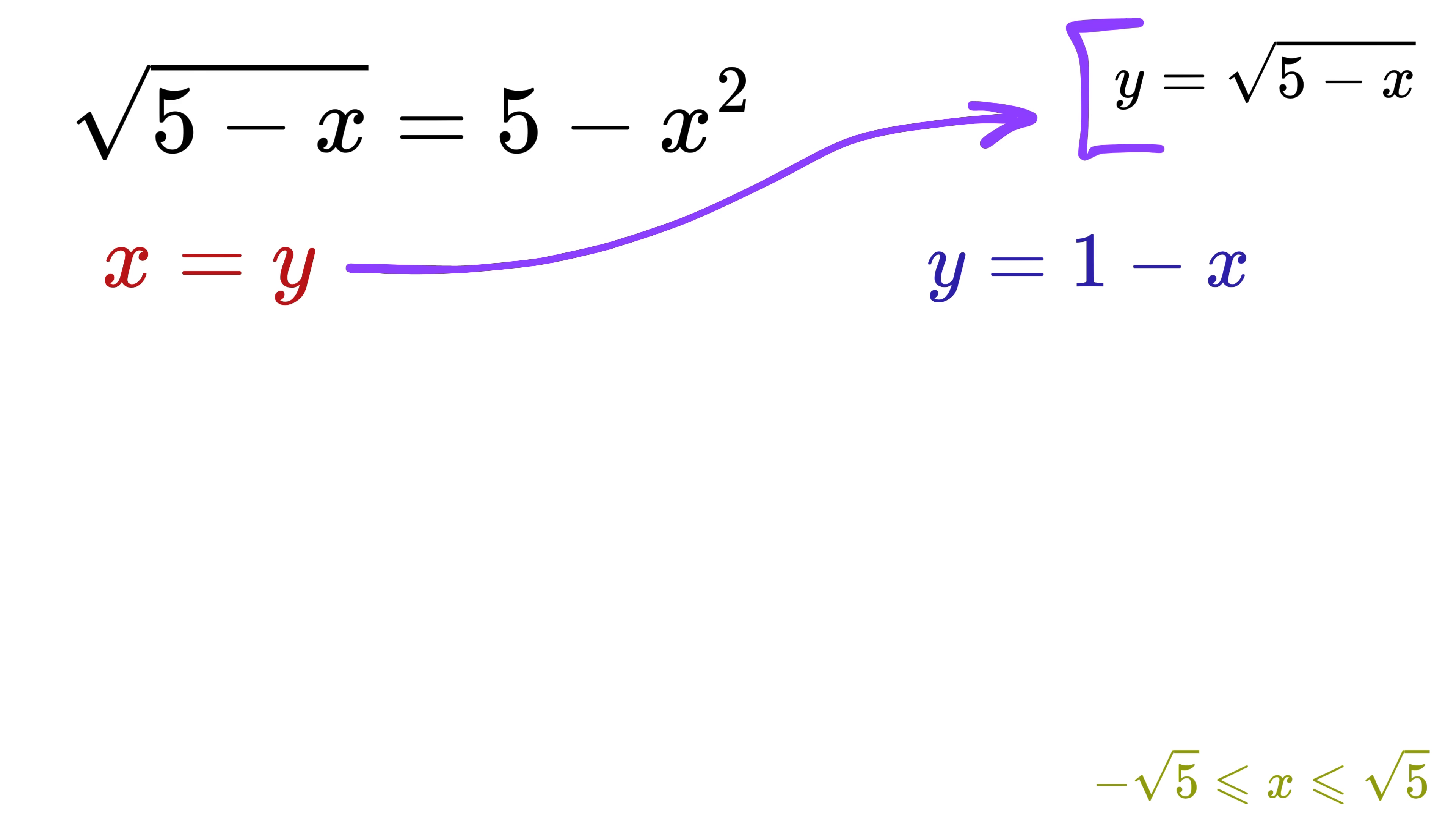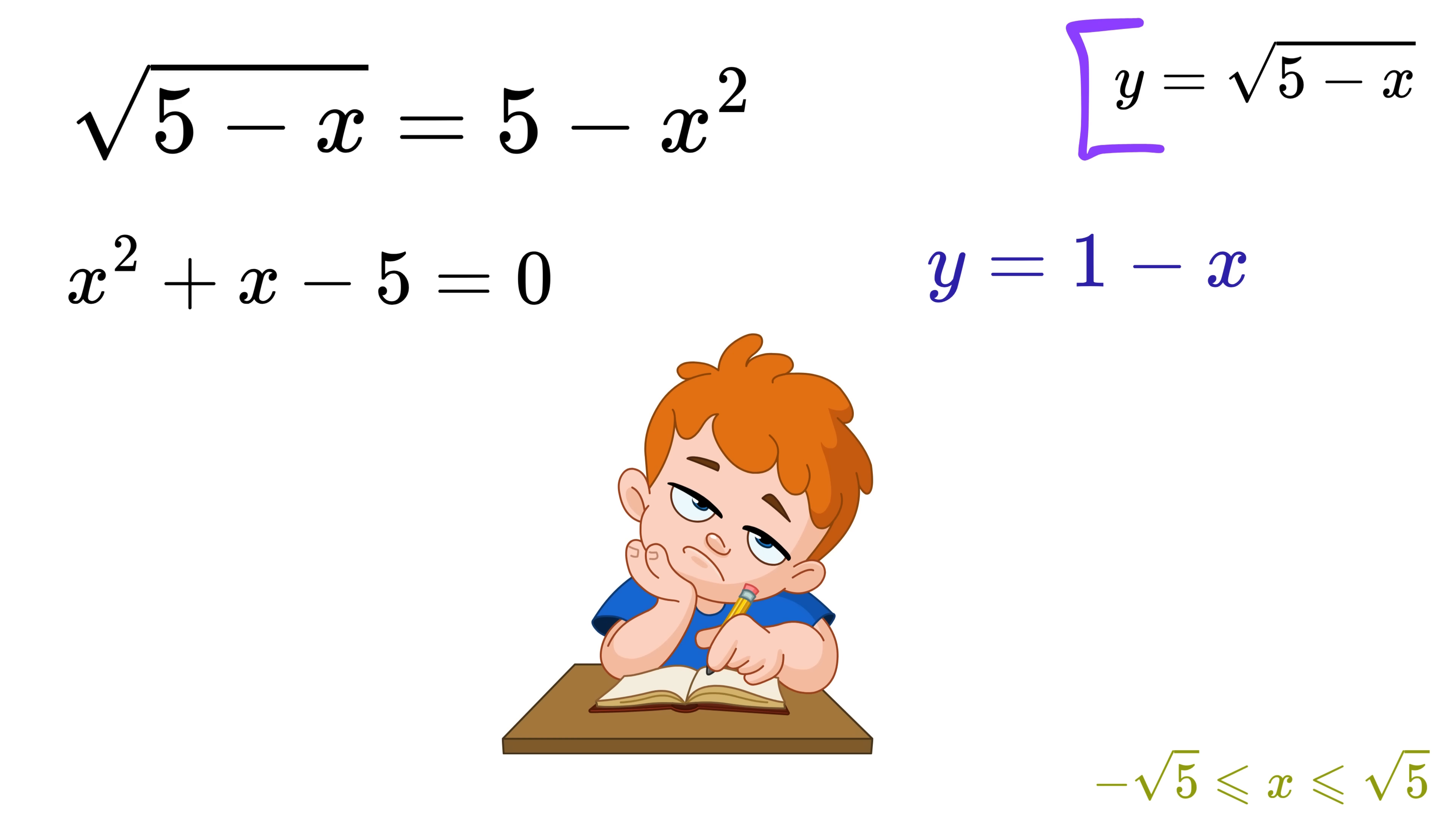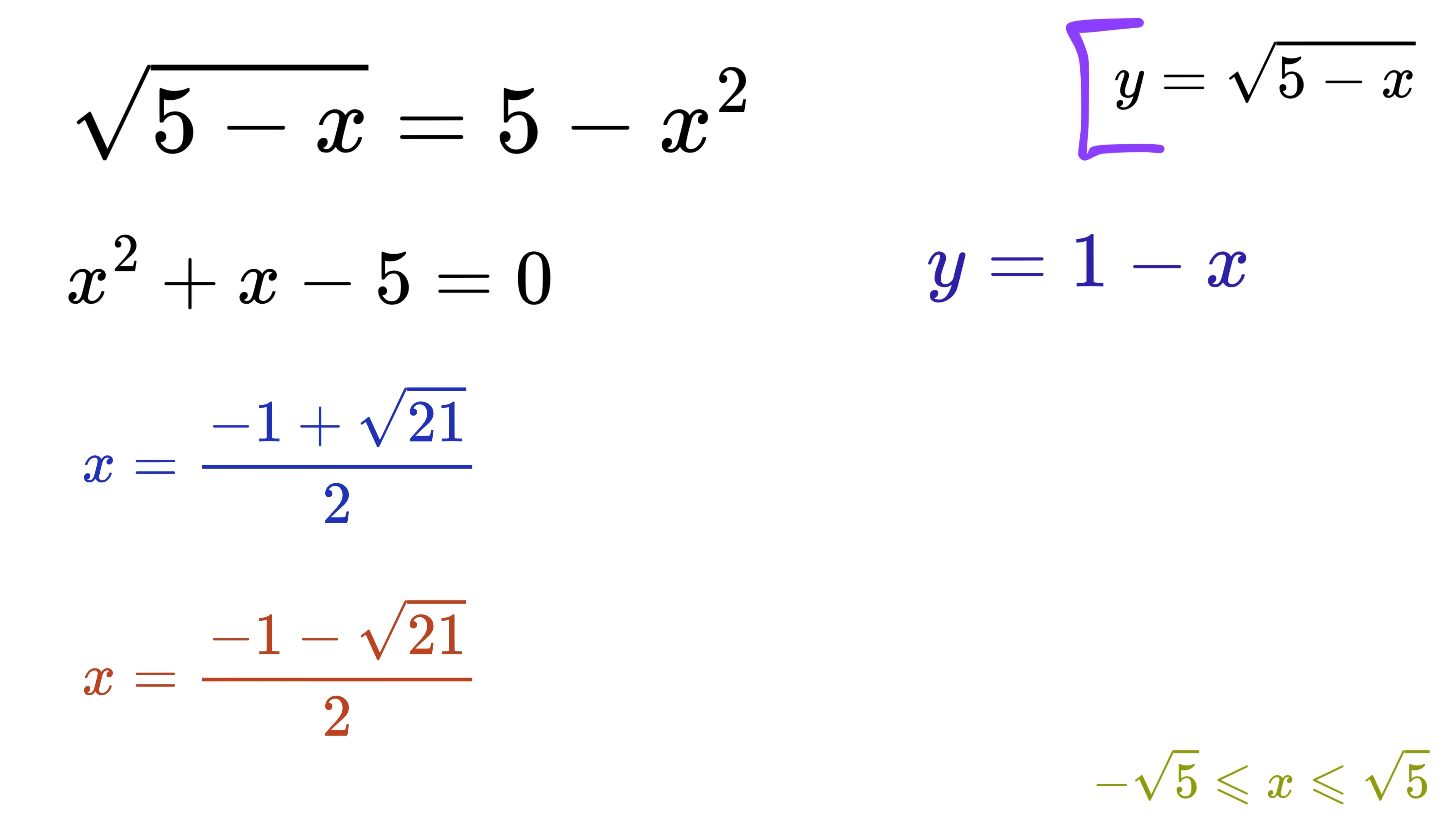Substitute y as square root of 5 minus x to get this. Now we can square both sides to eliminate the square root and get x squared equals 5 minus x, and after rearranging this, we get this nice quadratic equation. I will not bore you by solving a quadratic equation, and thus its roots will be this and this. But this root is approximately this, and it does not satisfy the condition we have on x. Therefore, we reject it.